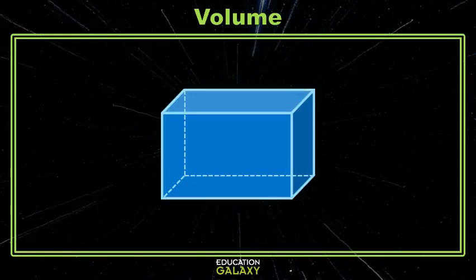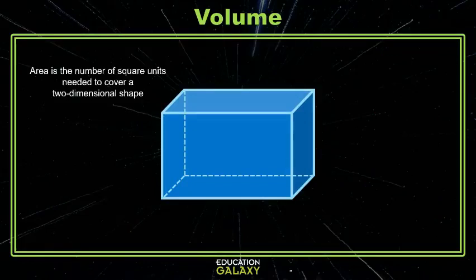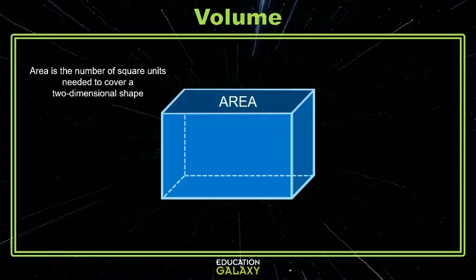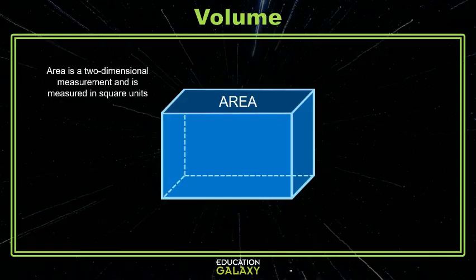Do you remember when we learned about area? Area is the number of square units needed to cover a two-dimensional shape. So if we wanted to find the area of the top of this prism or any of its faces, we know how to do that. Do you also remember that area is a two-dimensional measurement and is measured in square units? So we used to talk about the number of square units needed to cover a given shape.